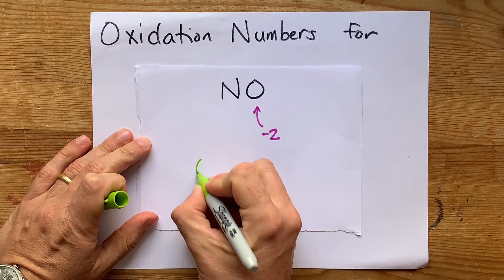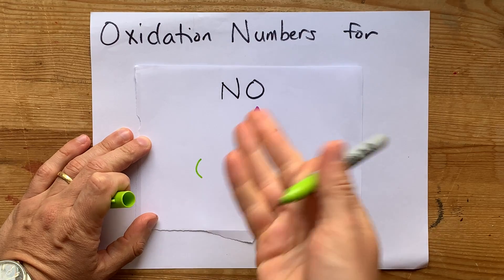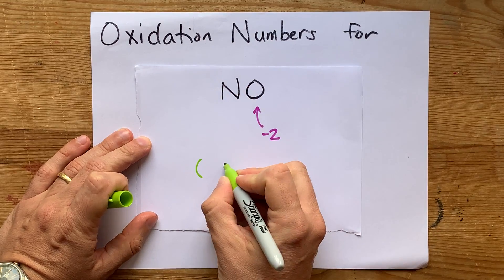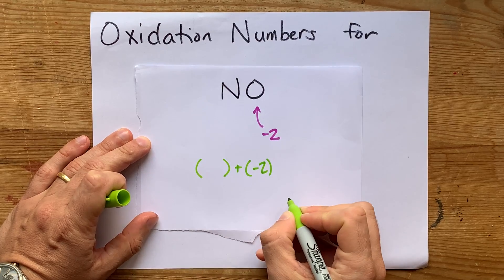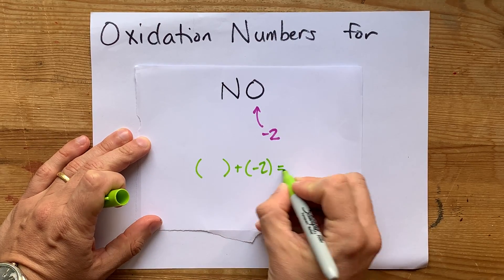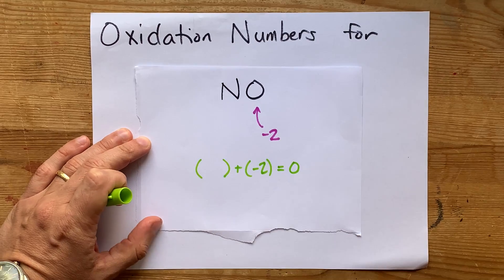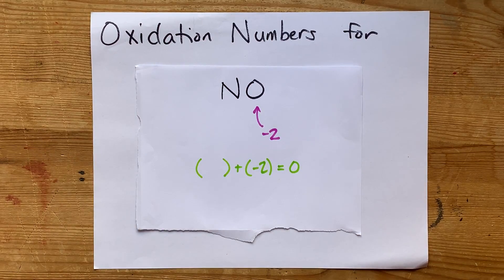Which means the oxidation number of nitrogen plus the oxidation number of oxygen needs to add up to the total charge on the particle, which is zero.